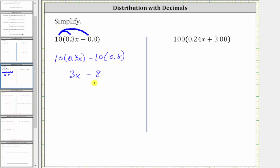A nice way to show why the shortcut for multiplying by 10 is to move the decimal point one place to the right is to write 0.3x as 3-tenths x and 0.8 as 8-tenths. If we did this, we would have 10 times the quantity 3-tenths x minus 8-tenths.